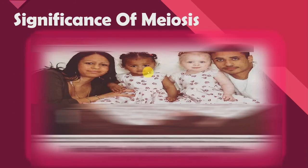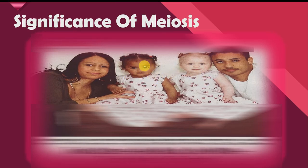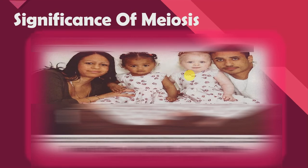Due to genetic variations, offspring appear unique and different from their parents. Even siblings have variant characters among themselves, like hair color, eye color, skin tone, height, and so on.